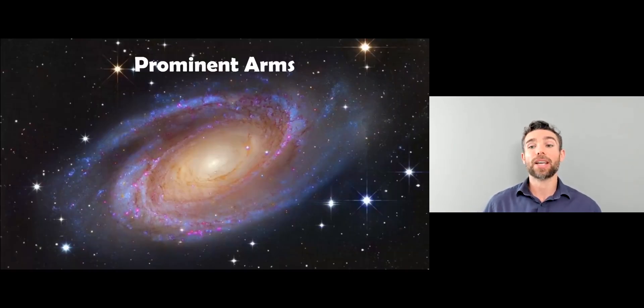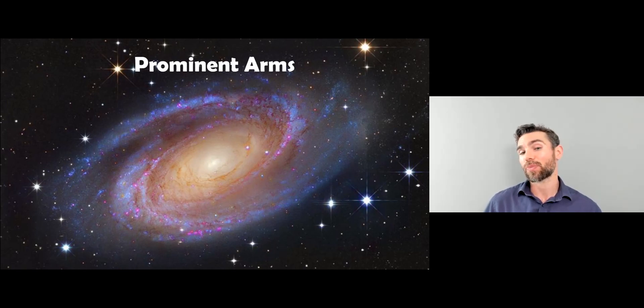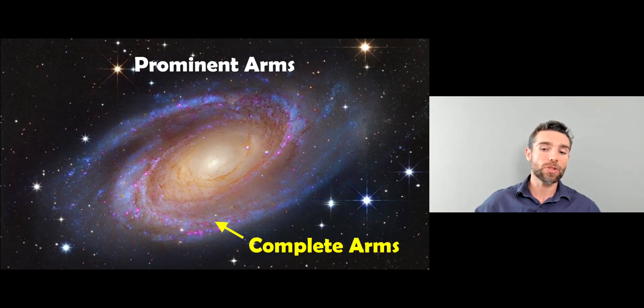A grand design galaxy might look like this. They have very prominent spiral arms, and this one here you can see, you've got very clear spiral arms, and they go from the center all the way out to the edge. So they are complete arms as well. They don't start at the center, come a little bit out, stop, then start again. There will be complete, very prominent arms that you can clearly identify. That is what a grand design galaxy actually looks like.